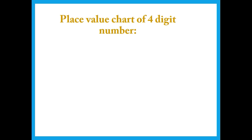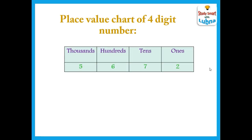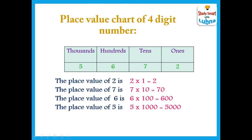Now we are going to discuss the place value chart of a four digit number. Here you can see the place value chart with four place values: ones, tens, hundreds, and thousands. The digits are two, seven, six, and five. The place value of two is two multiplied by one equals two. The place value of seven is seven multiplied by ten equals 70. The place value of six is six multiplied by 100 equals 600. The place value of five is five multiplied by 1000 equals 5000. The number can be read as 5672.